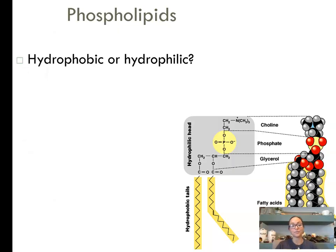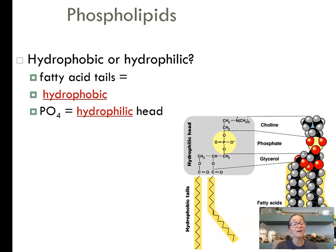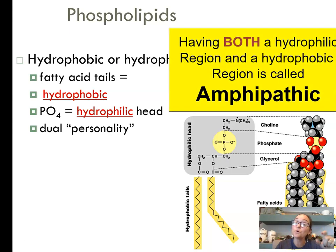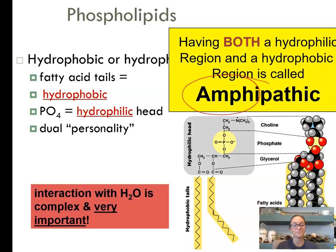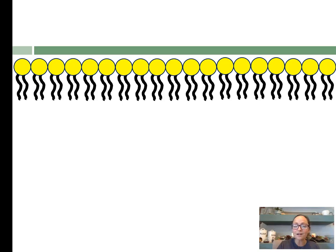When we look at phospholipids, are they hydrophilic or hydrophobic? Well, the fatty acid tails are hydrophobic and the phosphate group heads are hydrophilic. They have this dual personality, and we call that amphipathic, kind of like an amphibian that goes on both land and water.